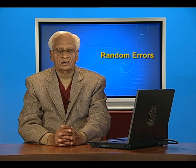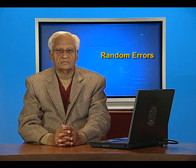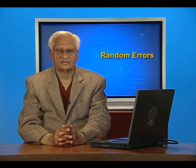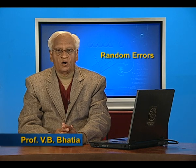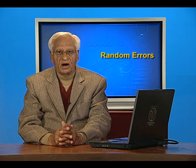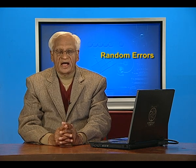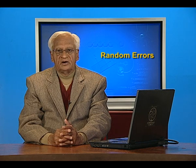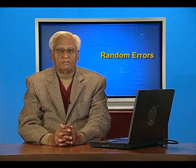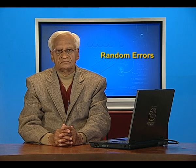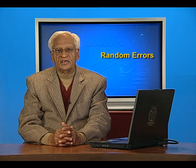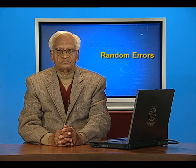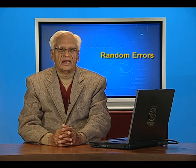In the last lecture, we discussed two kinds of errors which creep into our observations. One type is called systematic errors. Systematic errors are caused by deficiencies in the measuring device, by defective design of the experiment, or by personal biases of the observer. The deficiency in the instrument, for example, could be caused by a permanent shift in its zero or by non-uniform calibration of the scale.